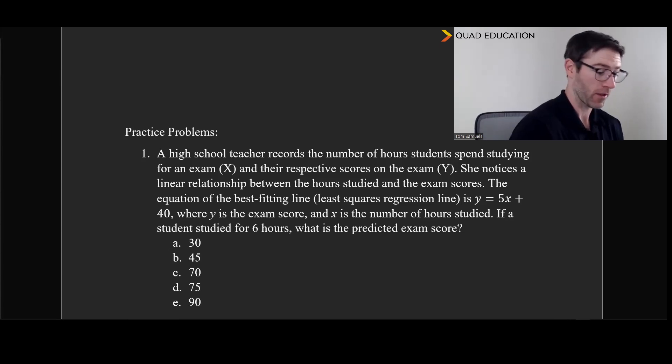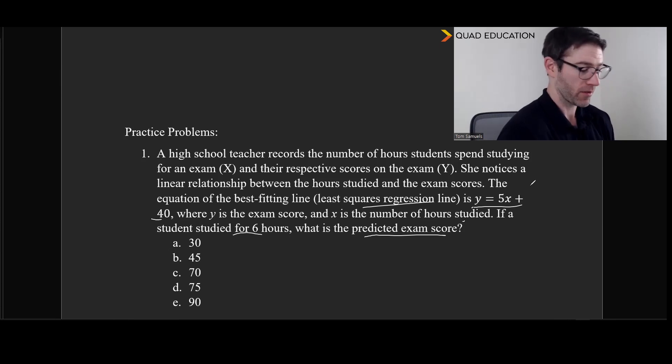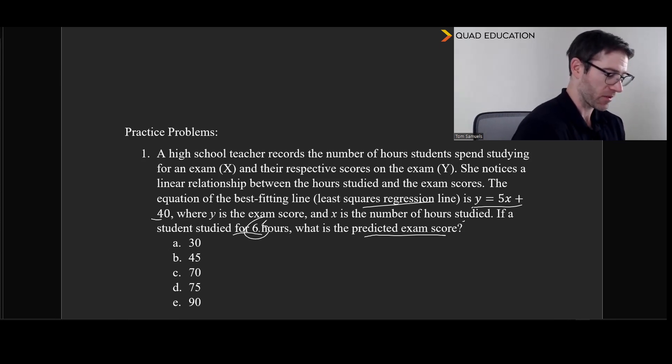Okay, let's take a look at this first one. A high school teacher records the number of hours students spend studying for an exam x and their respective scores for the exam y. They notice there's a linear relationship between the hours studied and the exam scores. The equation of the best fitting line is the linear regression value y equals 5x plus 40, where y is the exam score and x is the number of hours studied. If a student studied for six hours, what is the predicted exam score? And we can see pretty clearly here, if we put that six, which is the x value into the x right there, it's five times six plus 40, and 30 plus 40 is 70. And so that's going to give us our score of 70.